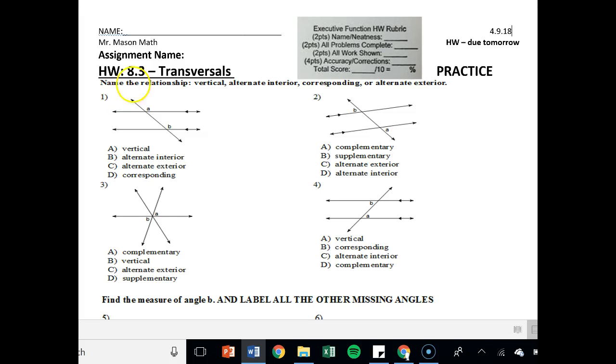So for number one, it says name the relationship vertical alternate interior corresponding or alternate exterior. So if we have two angles on the same side, but they skip, those are corresponding. Same side, but skipping an angle is corresponding. Look at number three.